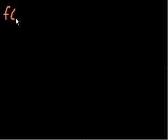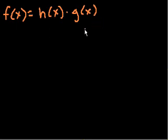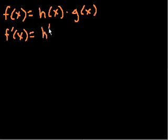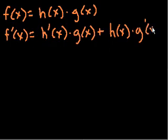So let's start with the product rule. Let's say that f of x is equal to h of x times g of x. In the chain rule, it was f of x is equal to h of g of x. But in this case, f of x is equal to h of x times g of x. If that's the case, then f prime of x is equal to the derivative of the first function times the second function, plus the first function times the derivative of the second function.